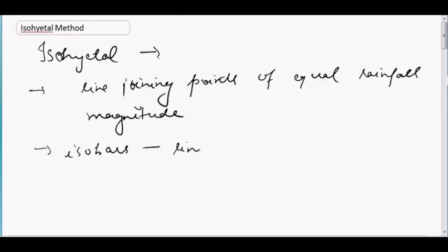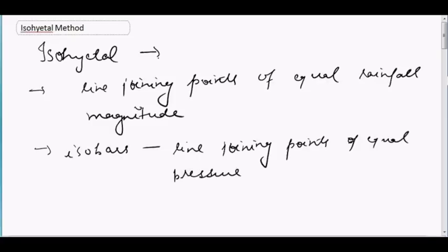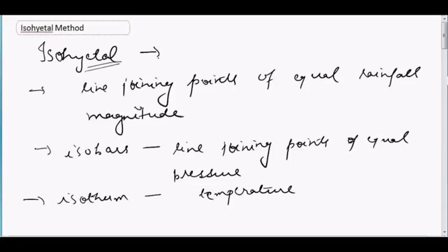Isobars are the lines joining points of equal pressure. Similarly, if you take the term 'isotherm,' they are the lines joining points of equal temperature. So similarly, we have isohytal, where the line joins points of equal rainfall magnitude. This is what this term means.